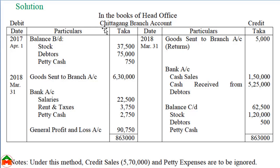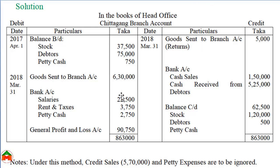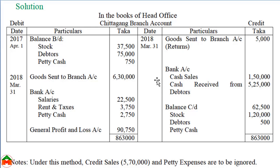This is the format of the branch account. From this branch account we can see that the Chittagong Branch is producing 90,750 as profit — it is a profitable branch. The head office should continue the operation of the Chittagong Branch. That is why we need to prepare accounts for the branch by the head office, so the head office can decide whether to continue the branch. If the branch is profitable, they can continue operating it.